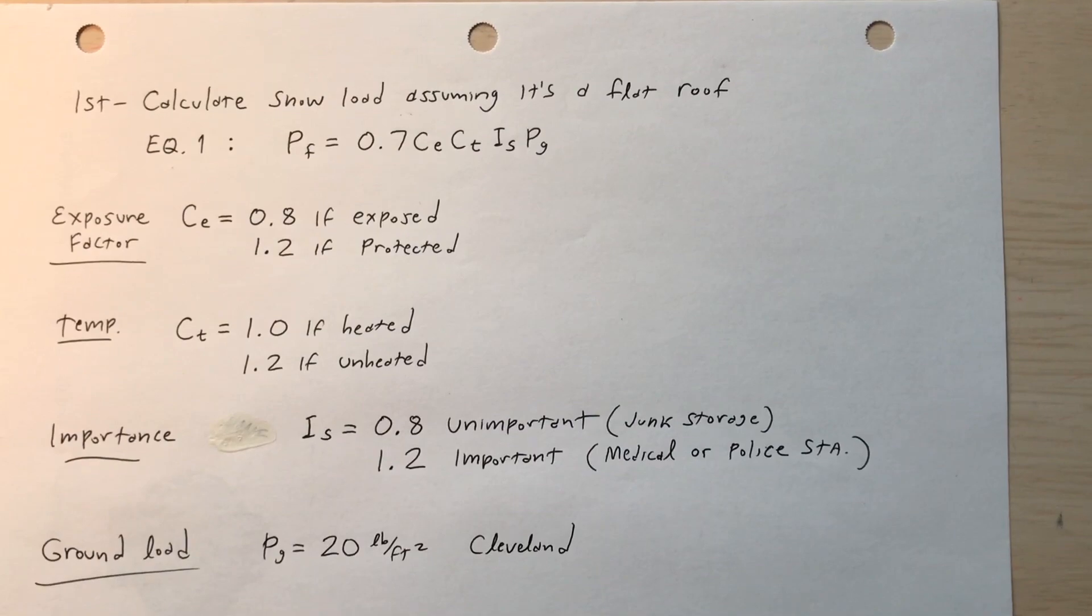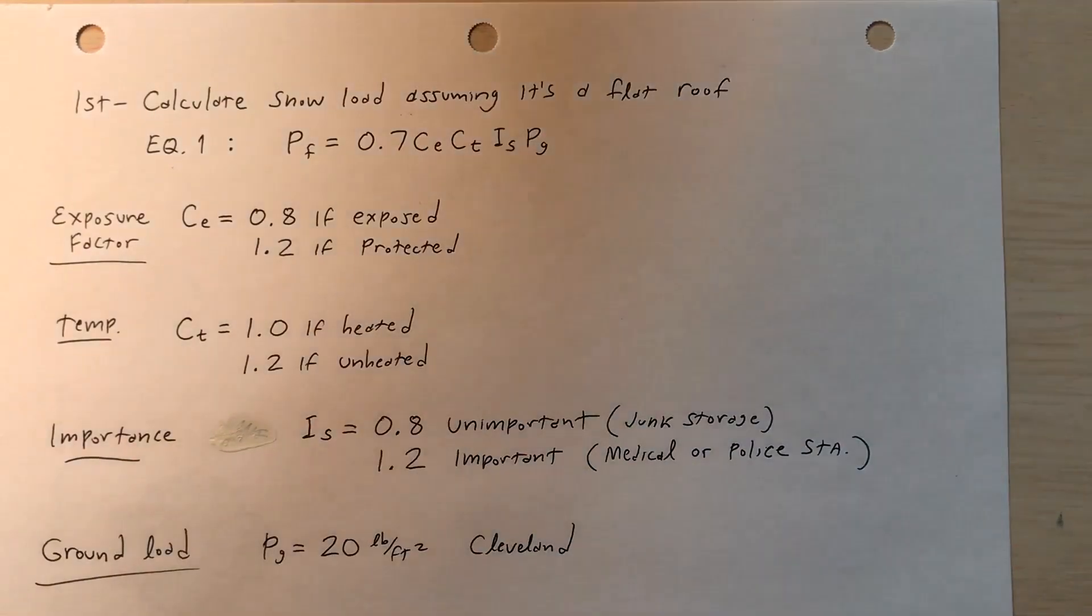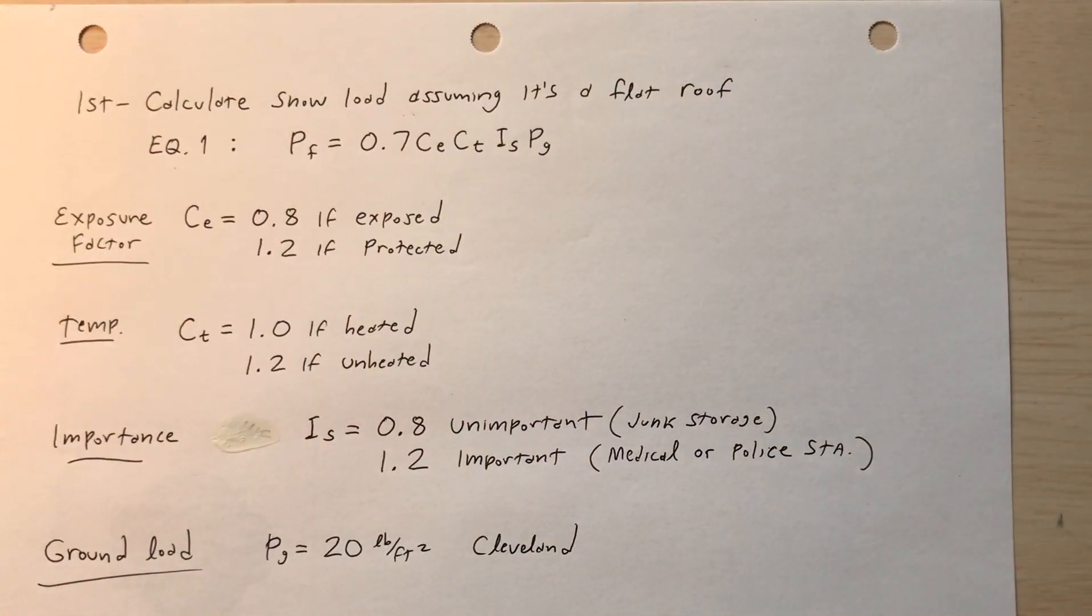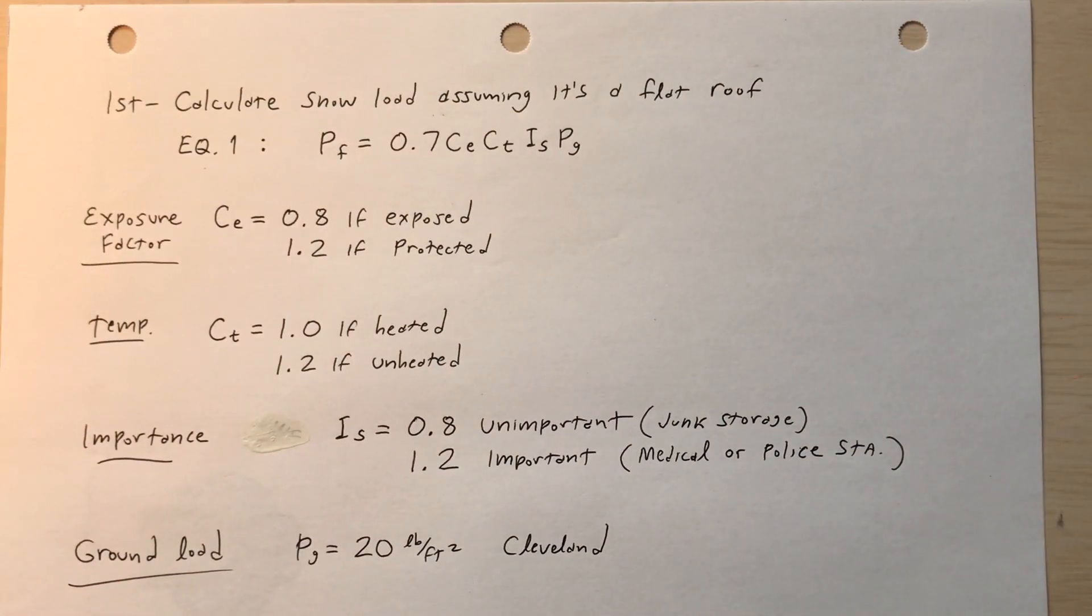So first, I'll calculate the snow load assuming that we have a flat roof. Remember that we don't actually have a flat roof, but I'm going to assume that it is for a moment. So I use what I called equation one for that. p_f is equal to 0.7 c_e, c_t, i_s, p_g.